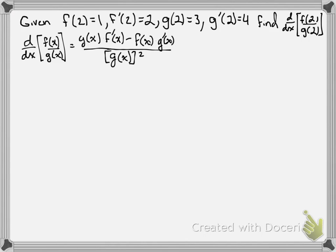So that's just our quotient rule. Now what we're doing is we are going to evaluate this at 2. So we're doing d dx of f of 2 over g of 2, and then we'll be able to plug in our values given above.